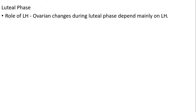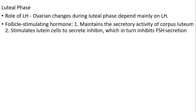In the luteal phase, all ovarian changes depend mainly on LH (luteinizing hormone) and follicle-stimulating hormone. LH maintains the secretory activity of the corpus luteum and stimulates lutein cells to secrete inhibin, which in turn inhibits FSH secretion.